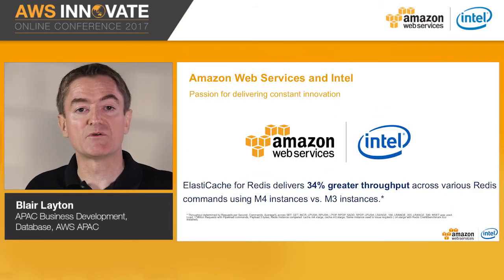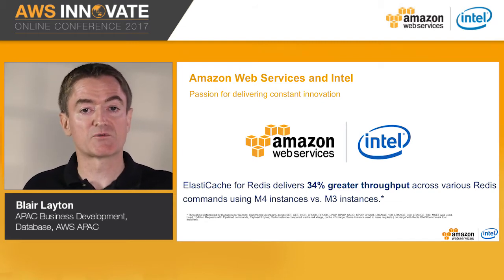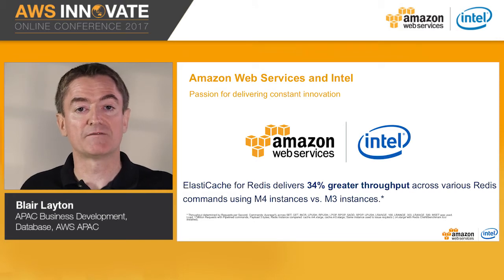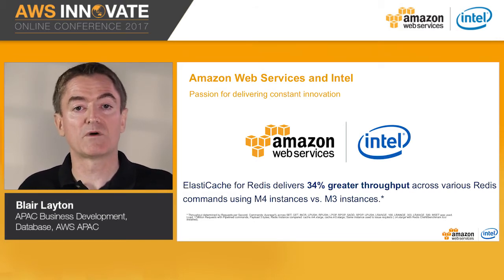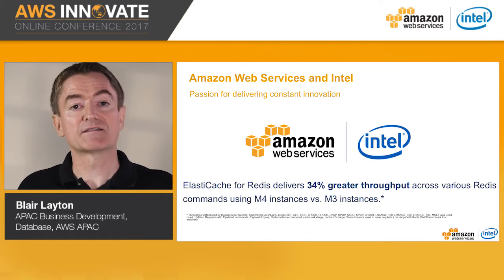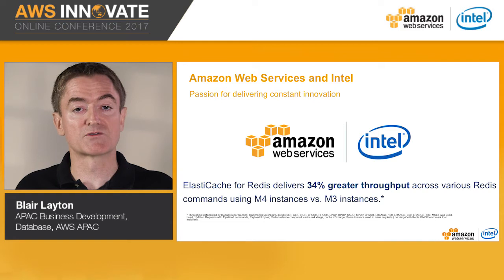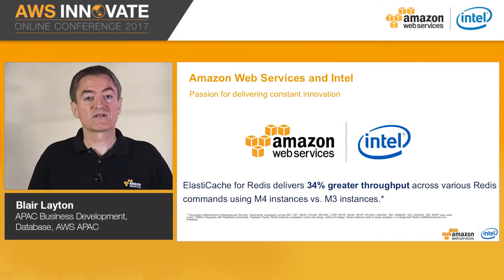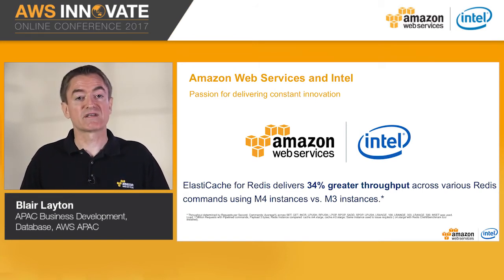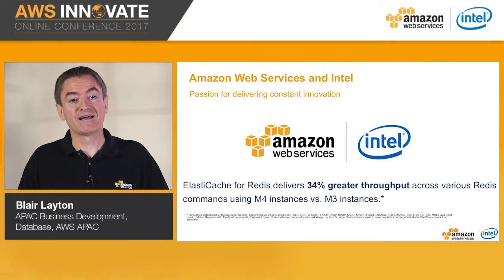It's important to take advantage of the AWS and Intel partnership for any workload on AWS, and ElastiCache is no exception. Intel works with AWS on each new instance family to combine the benefits of the latest Intel CPU and chipset platform together with AWS improvements. The new AWS instances are often much cheaper than older ones, so it's important to upgrade to the latest instances to maximize performance and lower costs. With ElastiCache Redis, this means you can achieve 34% greater throughput using M4 instances versus M3 instances at a lower cost.